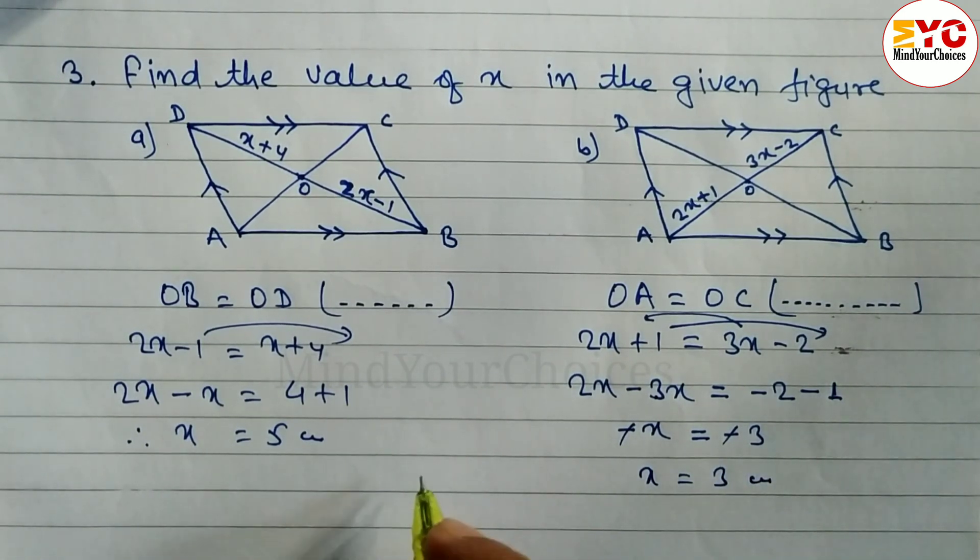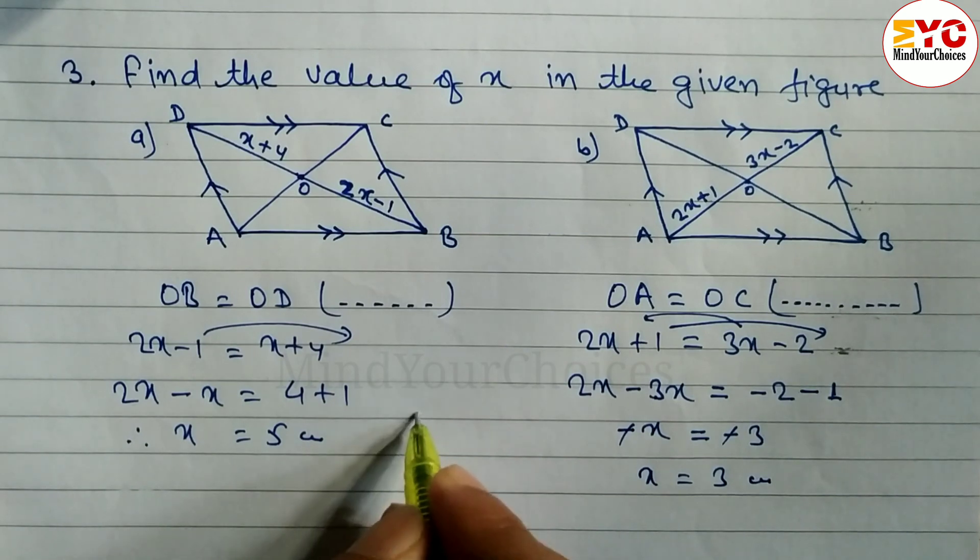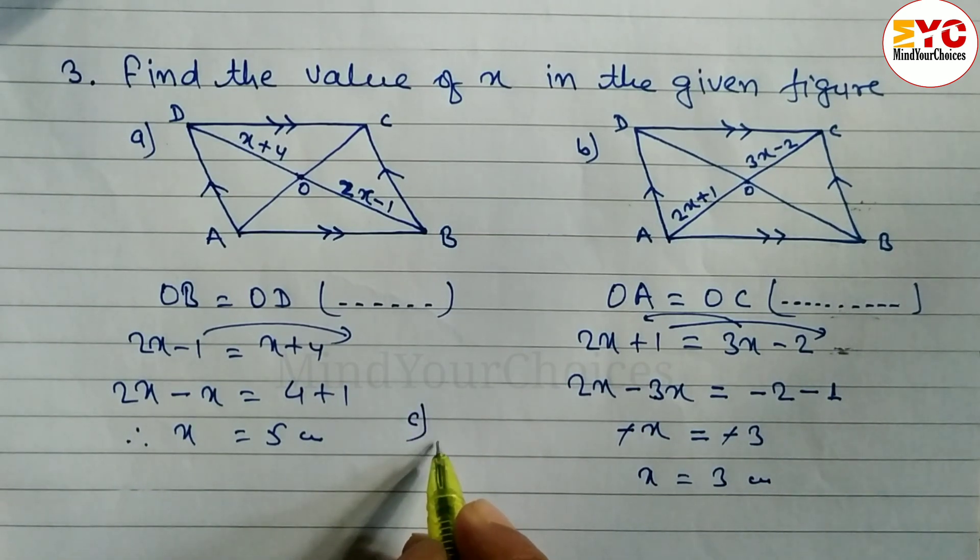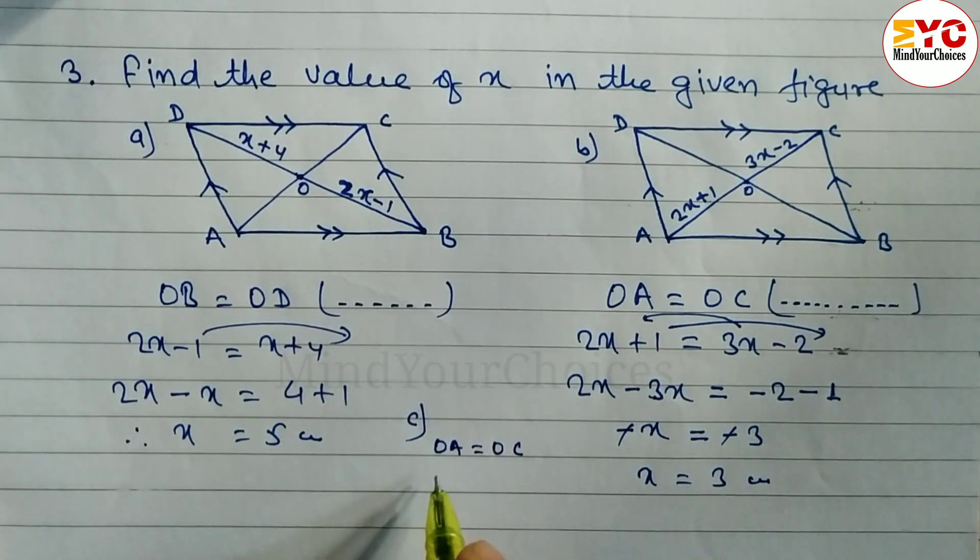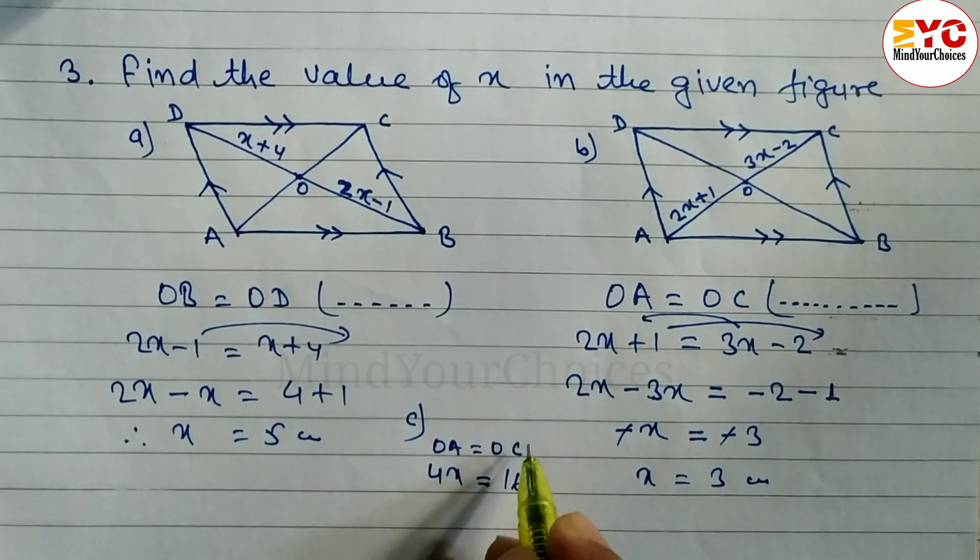Last one is there. It's very simple. I am going to do C, question number C here. Just you have to write OA is equal to OC. And what is the value of OA here? 4X is equal to OC, which means 16. Reason same.